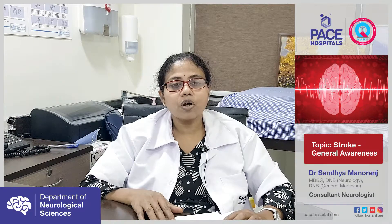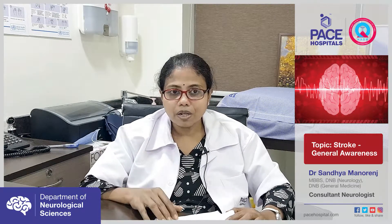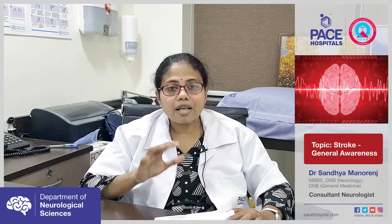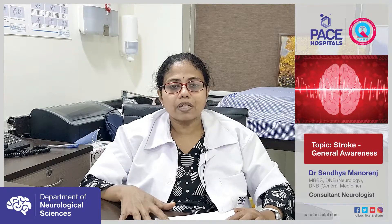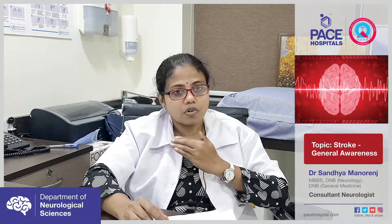Stroke is an acute onset of focal neurological deficit due to decreased blood supply to the brain. It can occur either due to a clot forming in the blood vessels supplying the brain, or due to rupture of the blood vessels. It can affect the brain, spinal cord, or the retina. The most common manifestation is in the brain, where a person presents with sudden onset of weakness of one half of the body.